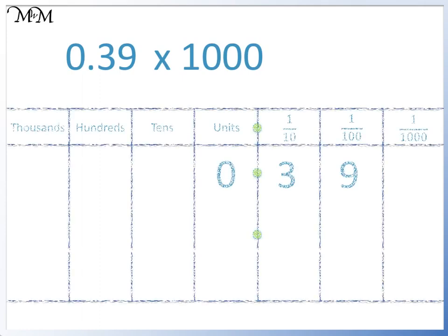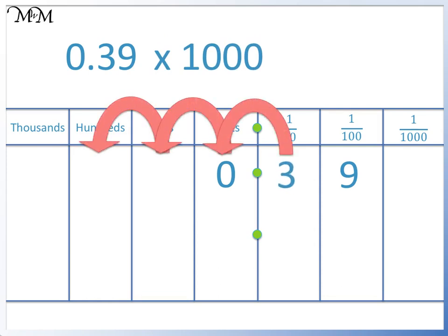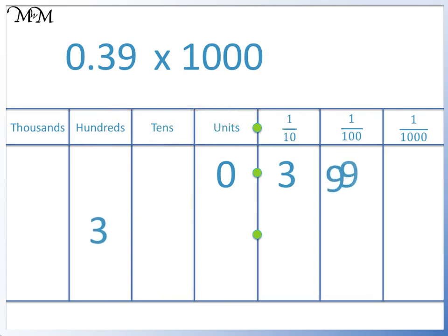0.39 times 1000. We are multiplying by 1000, so we move each digit 3 places to the left. We will start with the 3: 1, 2, 3. The 9 will then follow. There is a space in the units column, so we write in a 0. 0.39 times 1000 equals 390.